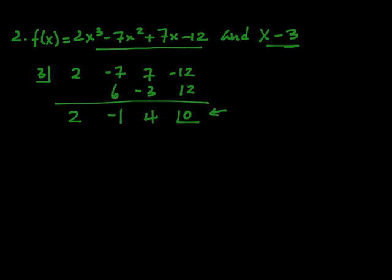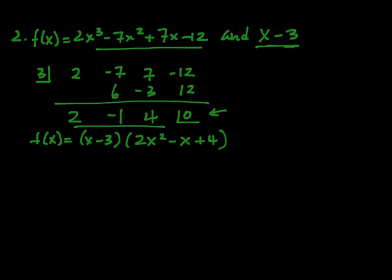So this 0 remainder tells us yes, it is a factor. So I can rewrite this as x minus 3, and 2x squared minus x plus 4, the quotient I got from here.